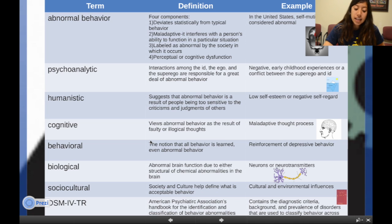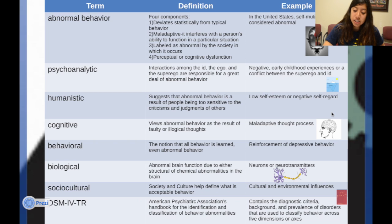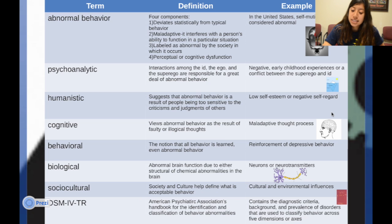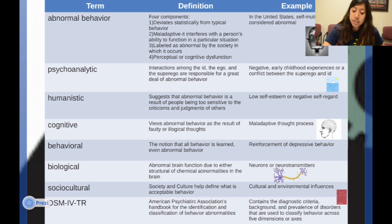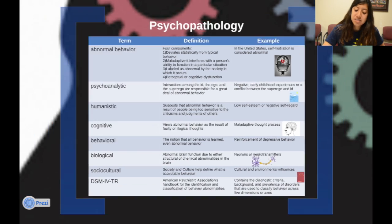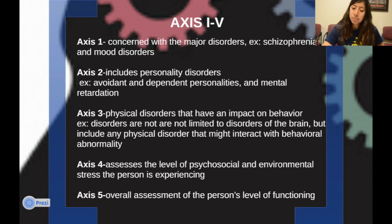Let's look at the DSM-IV-TR. This is the American Psychiatric Association's Handbook for the Identification and Classification of Behavior Abnormalities. It contains diagnostic criteria, background, and prevalence of disorders that are used to classify behavior across five dimensions or axes.